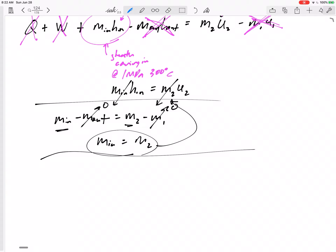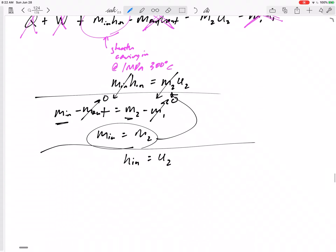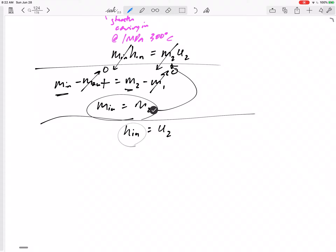So I get H_in equals U_final. All of that just to get that the enthalpy of the fluid going in from the supply line equals the internal energy U of the final fluid. Okay, do I know this H_in? I haven't found it yet, but I think I can find it.